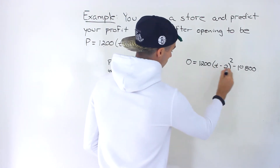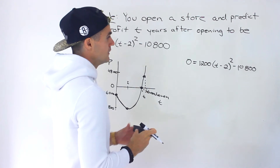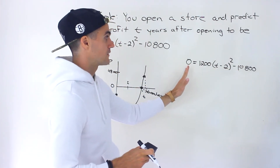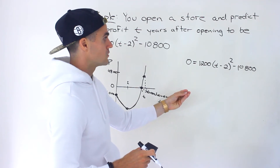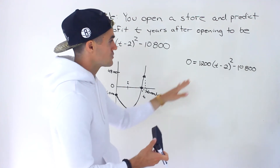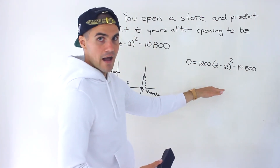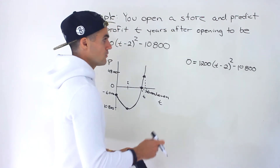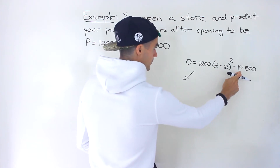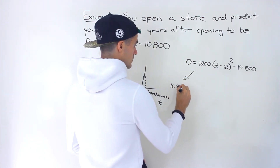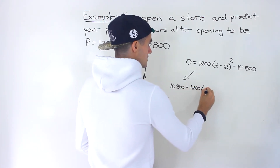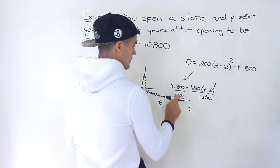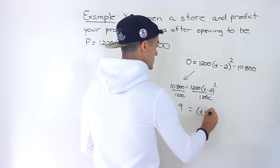We're given a quadratic in vertex form already, so there are actually two ways to solve it. You could solve it algebraically using the vertex form — bring 10,800 over to get positive 10,800 equals 1,200 times (T minus 2) squared. Divide both sides by 1,200. This cancels out, giving us 9 equals (T minus 2) squared.